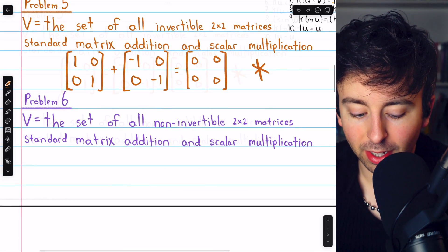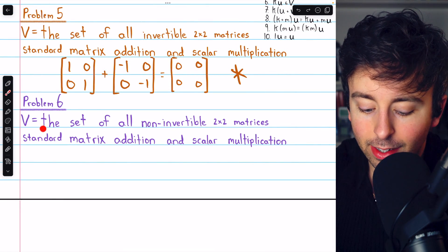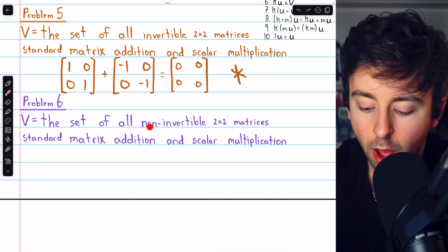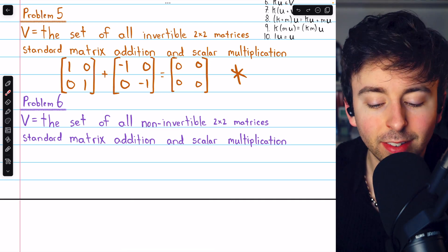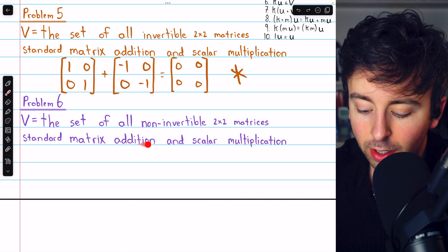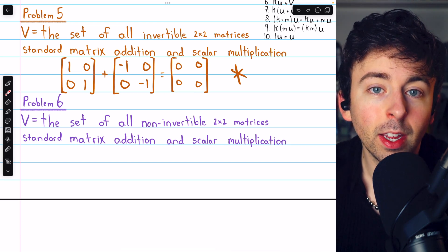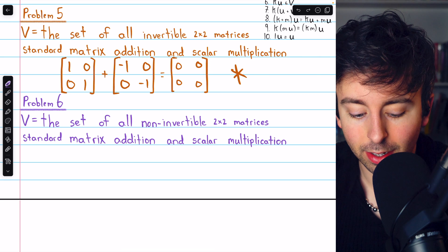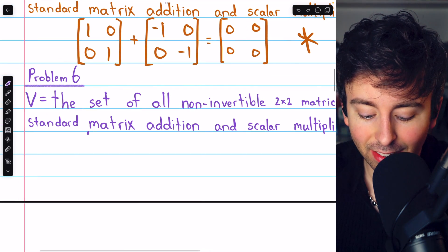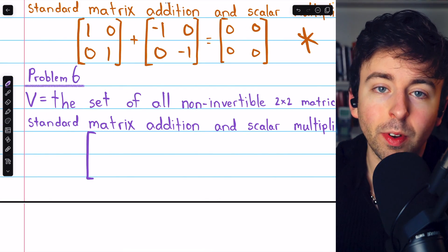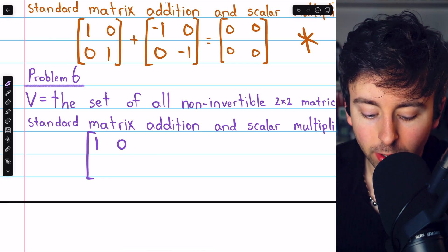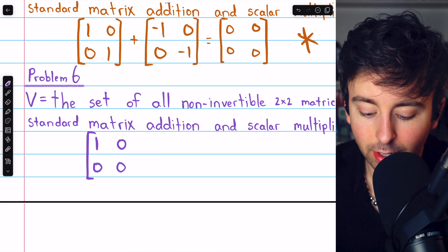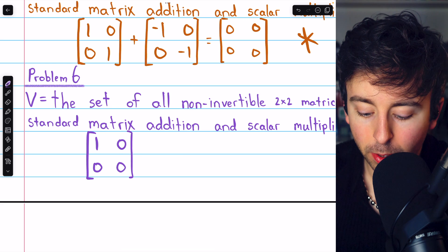Let's move on to problem 6. In problem 6, our set is the set of all non-invertible 2x2 matrices, again with standard matrix addition and scalar multiplication. You may be able to quickly come up with two non-invertible matrices that have a sum that is invertible, and so again we would violate closure. For example, this matrix [[1, 0], [0, 0]] is not invertible.